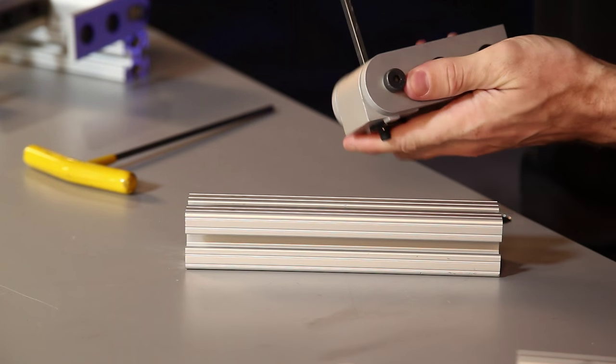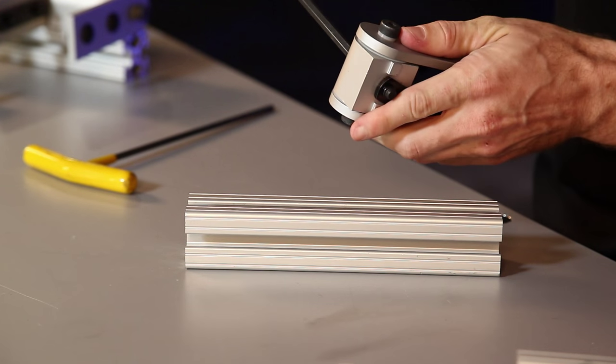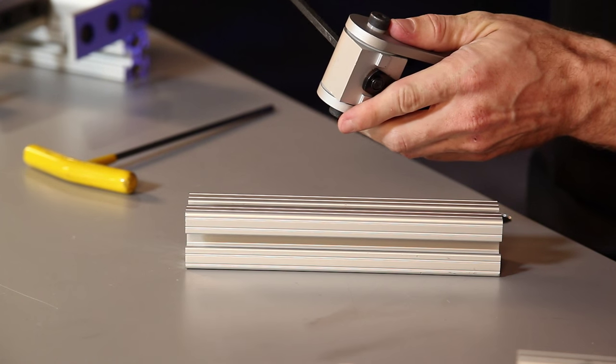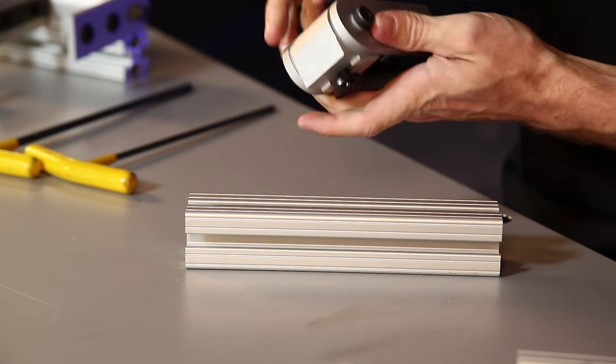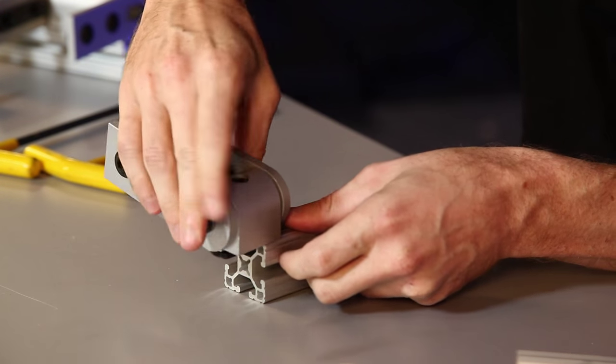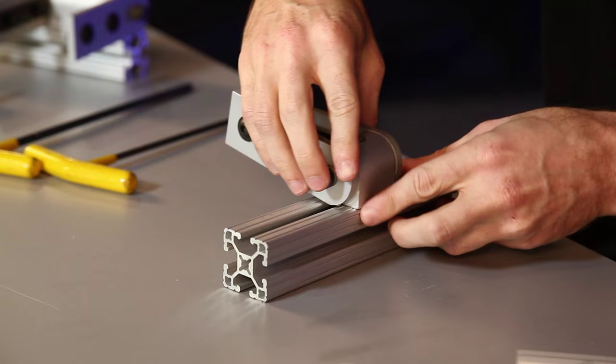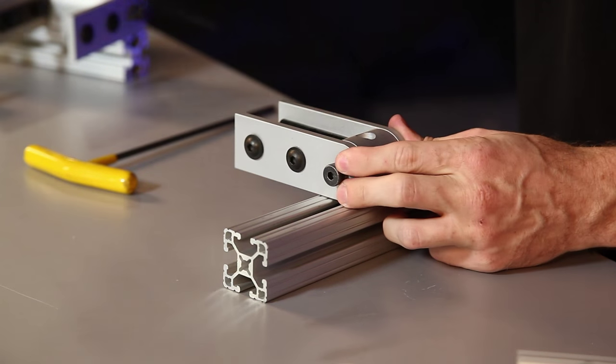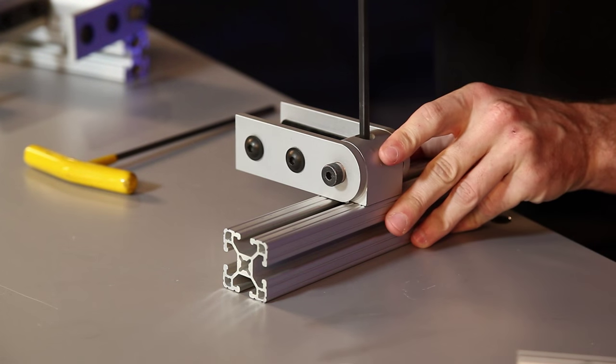We'll loosen up the T-nut on the nub. Now that we've got that loose, we'll slide it right into the open T-slot. We'll go ahead and find our position on there, and we'll tighten that down.